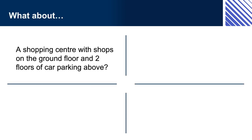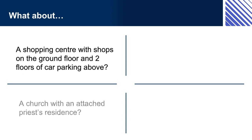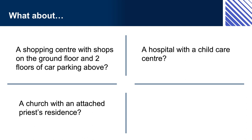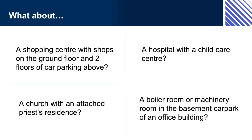What about a shopping centre with shops on the ground floor and two floors of car parking above? That equals Class 6 retail shops and Class 7A car park. A church with an attached priest's residence equals Class 9B for the church and Class 4 part of a building for the residence. A hospital with a childcare centre equals Class 9A healthcare building and Class 9B childcare centre, which equals an assembly building. A boiler room or machinery room in the basement car park of an office building equals Class 7A, as no special classification is needed for a boiler room or machinery room regardless of their size or percentage of floor space. However, there are specific performance requirements for the construction of these kinds of rooms, e.g. fire separation requirements — see Volume 1 for the specific performance requirements.